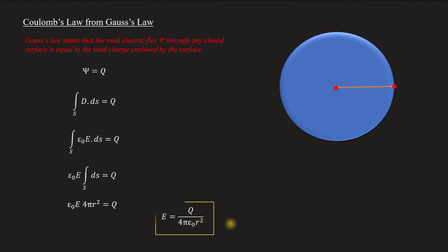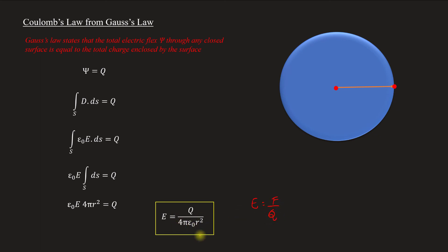So E is equal to q divided by 4 pi epsilon zero r squared. This is nothing but Coulomb's law. The Coulomb's law states F is equal to q1 q2 divided by 4 pi epsilon zero r squared. That means when we write E is equal to F by q1, then q cancels and our equation becomes E equals q over 4 pi epsilon zero r squared, expressing Coulomb's law.